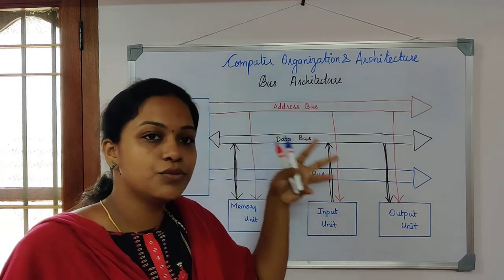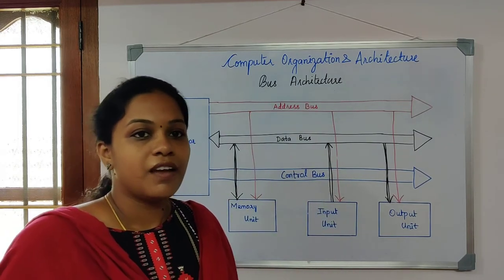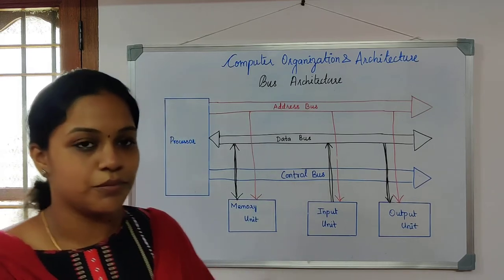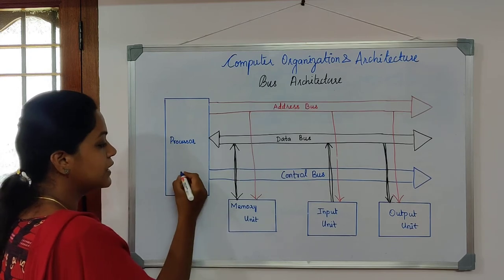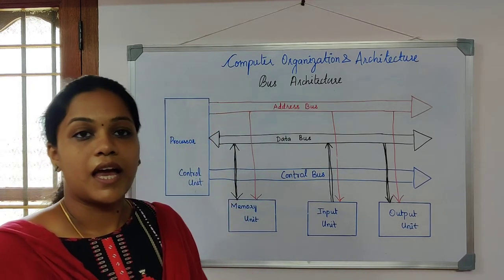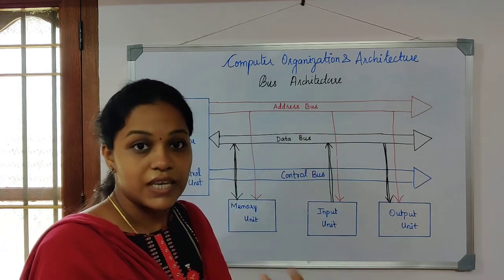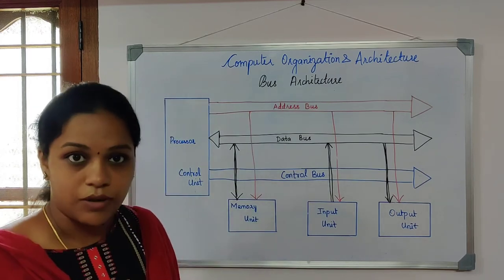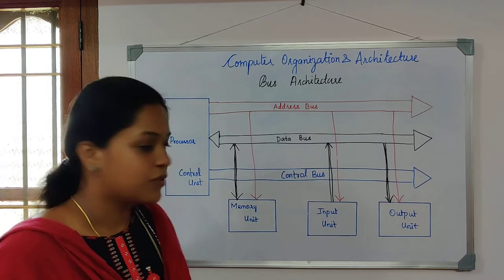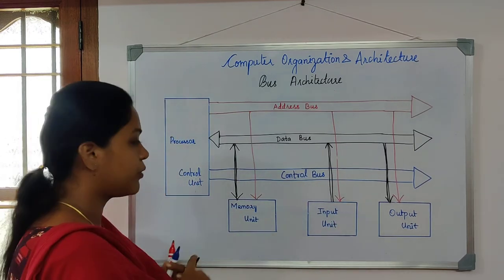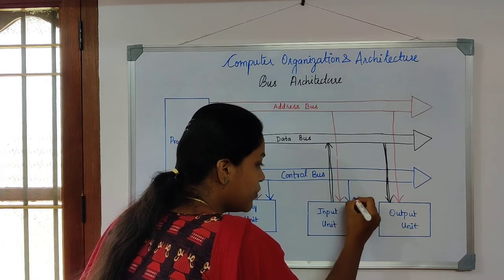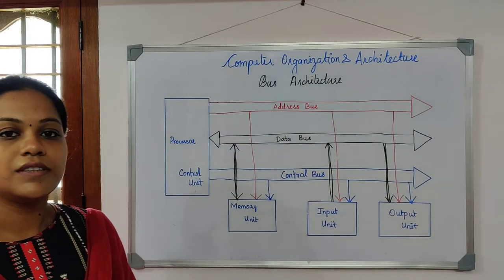Data bus is used to transfer data between the components of the computer system. The last one is control bus, which is used to transfer control signals to the various components of the computer system. The control unit inside the processor is the one generating the control signals, which tell each component how to act based on the instruction. Control bus is unidirectional — the control unit passes control signals to the memory unit, input unit, and output unit.